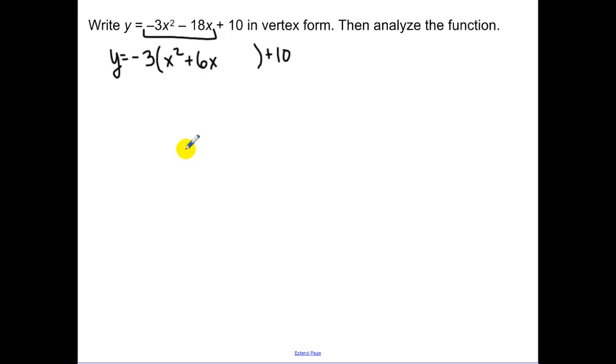So I factored out a negative 3, making sure that I changed the plus 6x to a plus. Now I need to add in a number that completes the square, and then remember I need to subtract that number on the outside. I really added in 9 times by negative 3 because this negative 3 was factored out, and I'm really subtracting a 27. So what cancels that out? Add a positive 27.